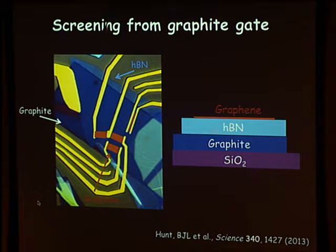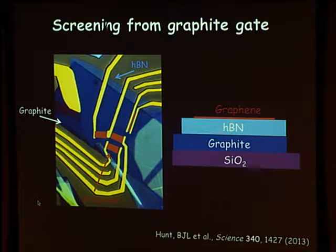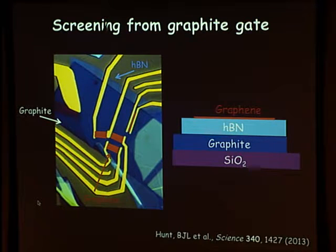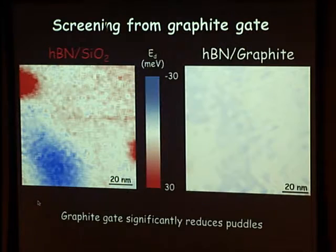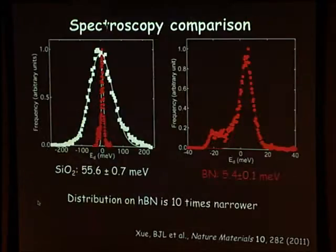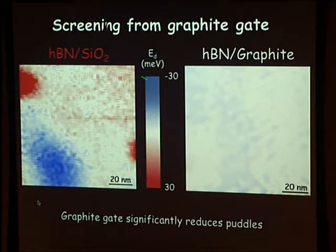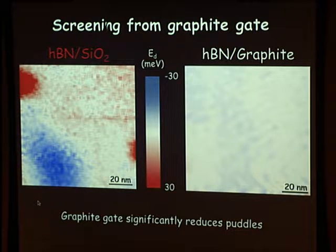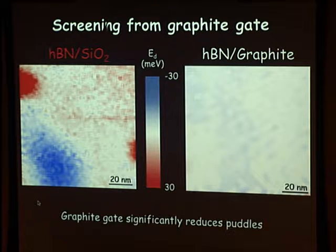A few years later, we made more complicated devices: silicon oxide / graphite / boron nitride / graphene stacks. The idea is that graphite, being essentially a metal, screens out the charge variation from the silicon oxide, giving an additional order of magnitude improvement in quality. With this graphite back gate structure, charge fluctuations are almost eliminated and mobilities reach about one million cm²/V·s — very clean, high quality devices enabling new physics.